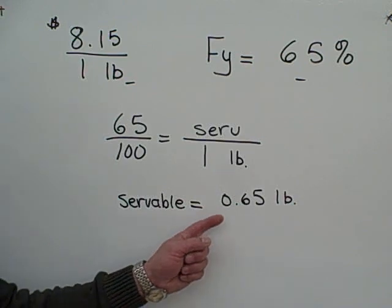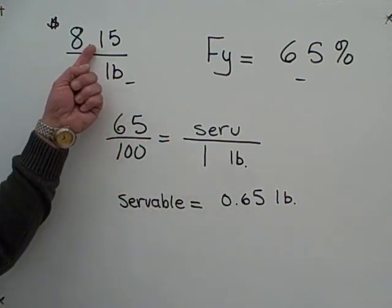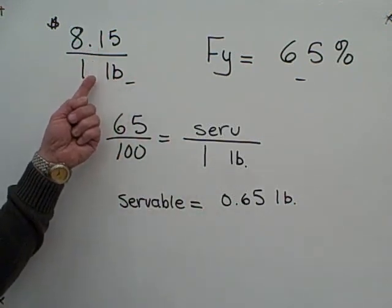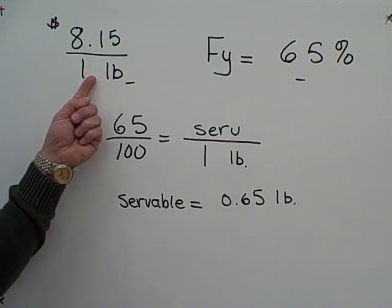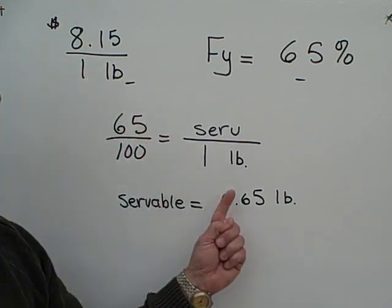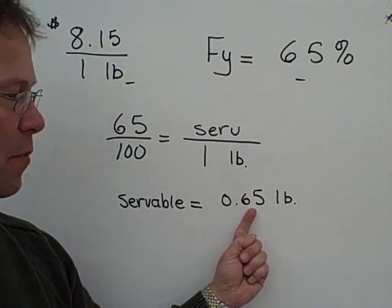And now we can calculate that we purchased $8.15 to buy one pound of as-purchased product. That shrinks to 0.65 pounds.